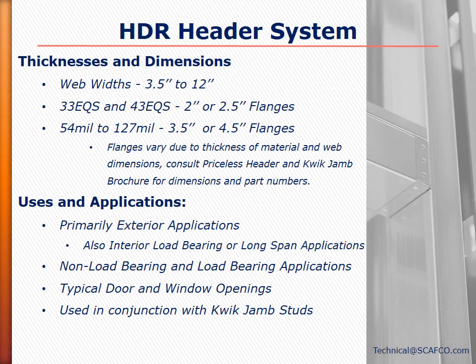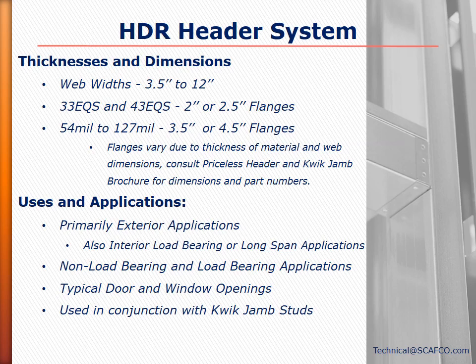The final step is to drop the outer portion of the HDR header into the saddle clip followed by the inner portion. The HDR header can then be secured with screws through the pre-punched holes in the saddle clip as well as screws connecting the inner and outer HDR pieces. The HDR headers come in standard wall widths from 3.5 inches up to 12 inches. Thicknesses include 33, 43, 54, 68, 97, and 127 mil — no other thicknesses are available.